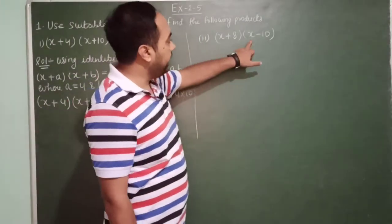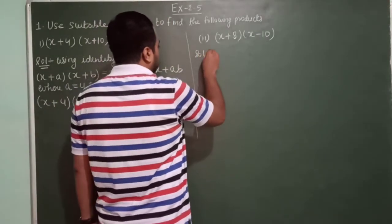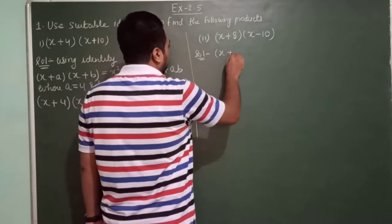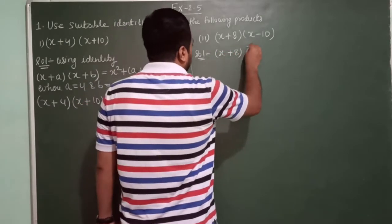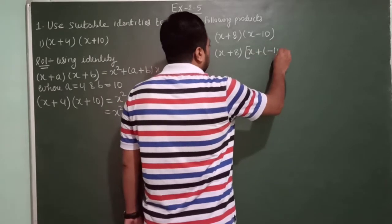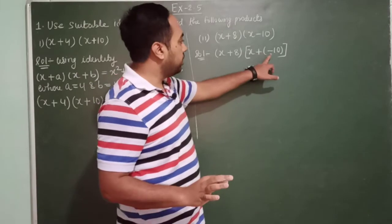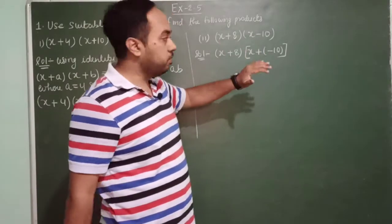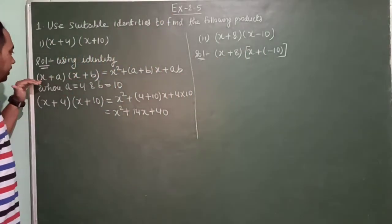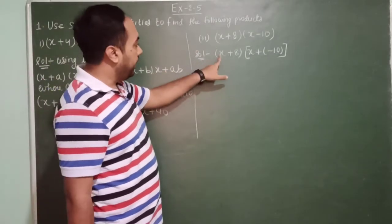Now the second one is (x + 8) into (x − 10). I am writing x plus 8 as it is, and x minus 10 I am writing as x plus (−10), because positive into negative is negative. The same identity we used in the first question — x plus a into x plus b — will be used here as well.